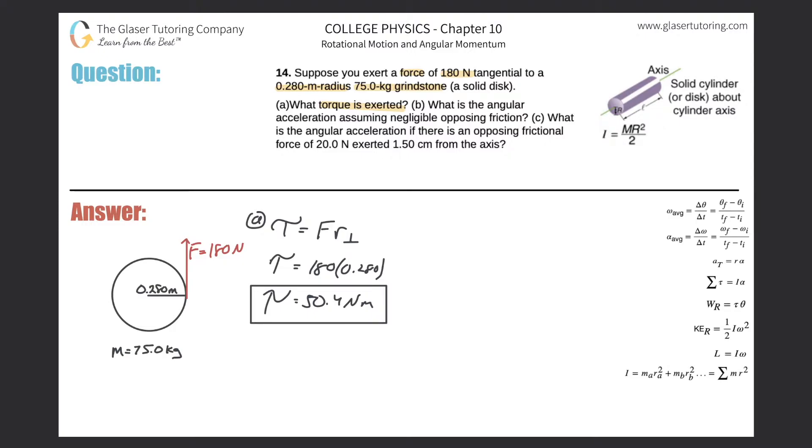Let's take a look now at letter B. It says, what is the angular acceleration assuming negligible opposing friction? Now I have to think, well I know the torque, and how do I connect torque to angular acceleration? Via this formula over here on the right hand side. This formula says that the sum of the torques equals the moment of inertia of the object multiplied by the angular acceleration. To solve for angular acceleration, it would be the sum of the torques divided by the moment of inertia.